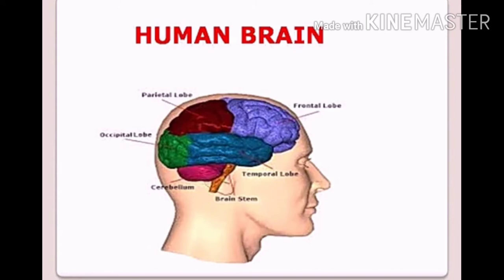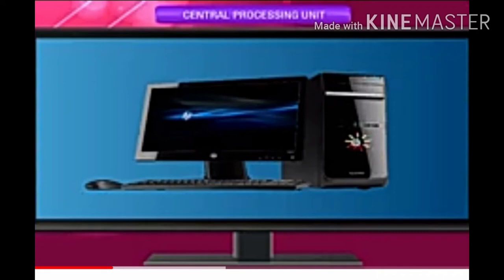Let's understand with the help of an example. Just like in the human body, the brain has an important role to play in the activities that we perform — our signals we receive from our brain. Likewise, the central processing unit takes action on the data entered by the user. It converts the data into meaningful information with the help of the processor, which is the CPU. The conversion of data into information is called processing.